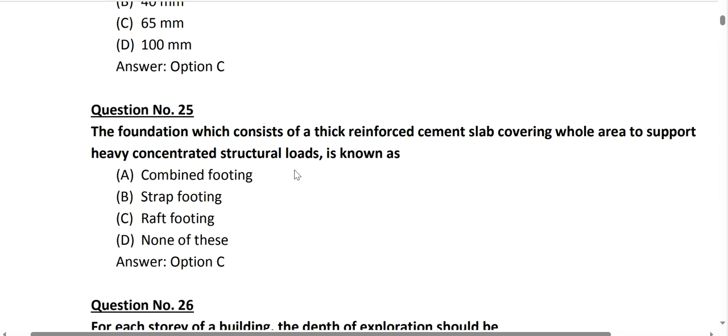Question number 25: the foundation which consists of a reinforced cement concrete slab covering the whole area to support heavy concentrated structural loads. This slab covering the whole area is a raft footing. Option C, raft footing, is correct. Strap footing and combined footing connect two columns, but here the slab covers the whole area.